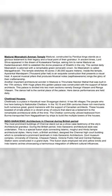Madurai Meenakshi Amman temple, constructed by Pandya kings, stands as a glorious testament to their legacy. In ancient times, Lord Shiva appeared in the dream of Kulasekara Pandyan, asking him to name Madurai as Kadambavanam and establish a divine presence of Parasakti in the city. In the central city, Meenakshi Amman is adorned with a remarkable green emerald crown and is called Maragadavalli. The temple stretches 45 acres — 180,000 square meters. The Aayiram Kal Mandapam, the thousand-pillar hall, is an exquisite construction presenting a visual treat. Special musical pillars that produce musical notes, Sabda Swaras, sing the glory of their craftsmanship.